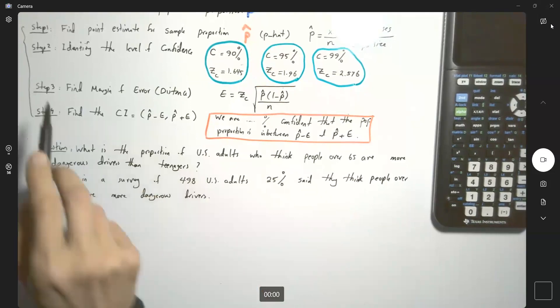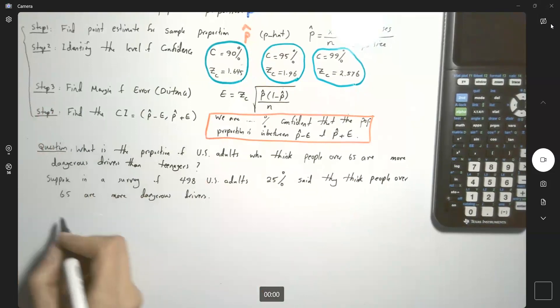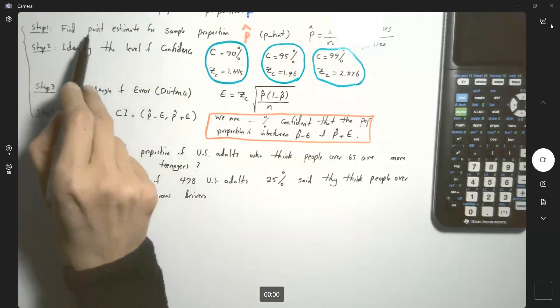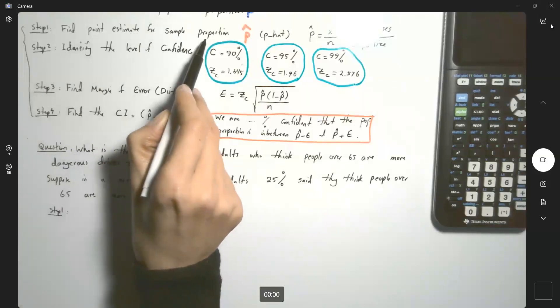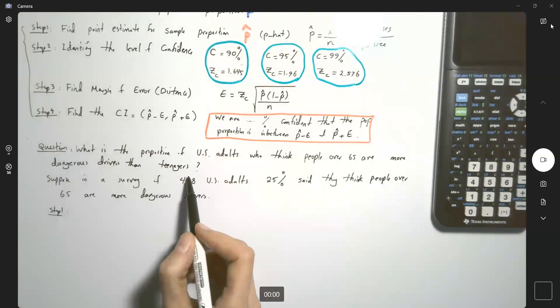Well, we need to follow the steps and build a confidence interval. In step one, we need to find a point estimate for sample proportion. I have the sample size,